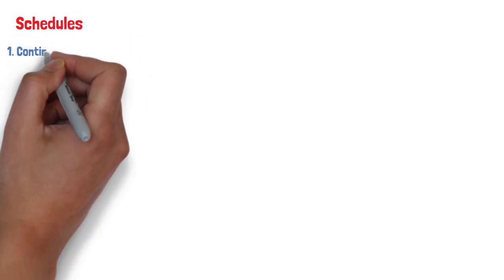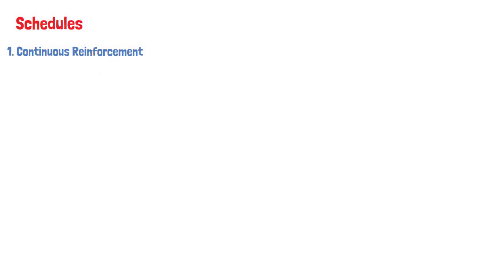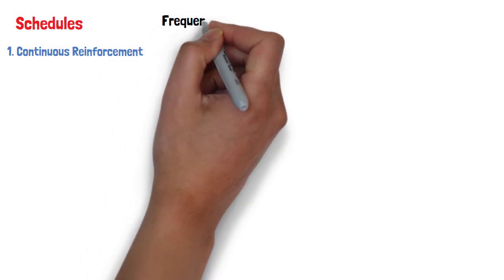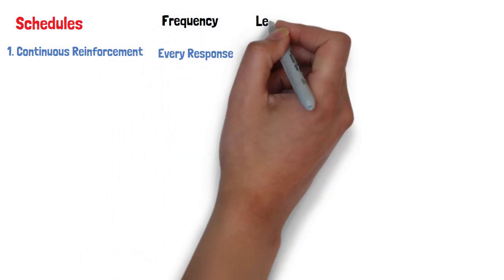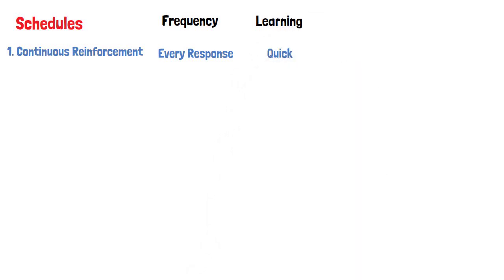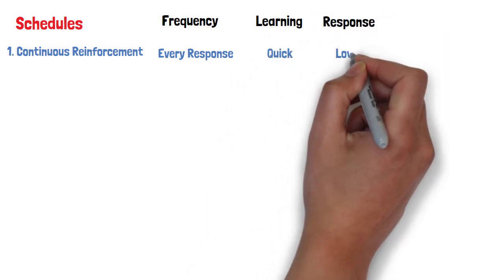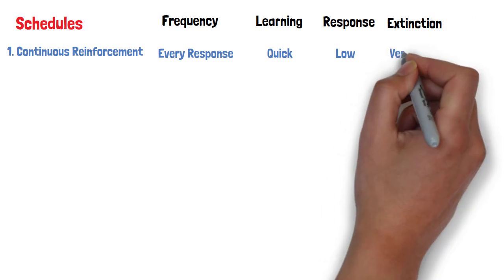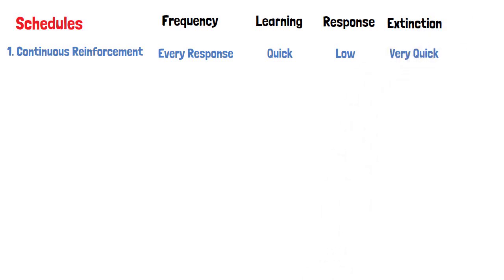Skinner identified several different schedules of reinforcement that impact the operant conditioning process. Continuous reinforcement involves delivering a reinforcement every time a response occurs. Learning tends to occur relatively quickly, yet the response rate is quite low. Extinction also occurs very quickly once reinforcement is halted.